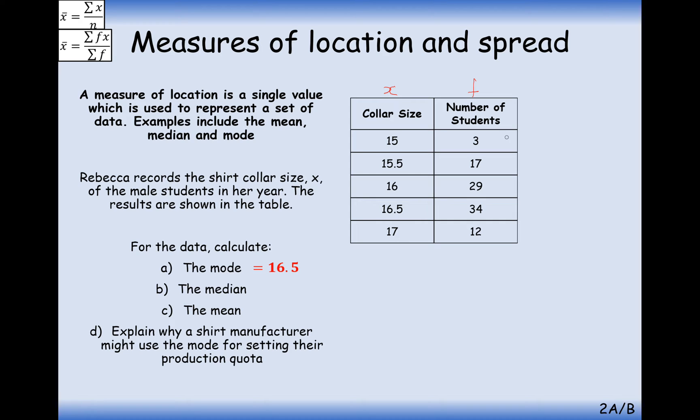The median here is going to be the middle way mark. So what we need to first do is work out how many pieces of data we've got, which is 95 pieces of data. And the way that we work out the middle value of this is we do 95 plus 1 divided by 2. Okay, so it's always important that you add that 1 before you divide by 2 and work out the median.